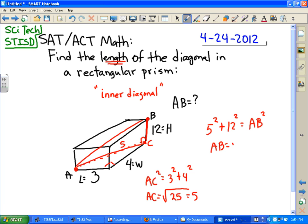So AB would be the square root of 144 plus 25, which is 169. So AB would be the square root of 169, which is 13. So the answer for this problem would be 13.